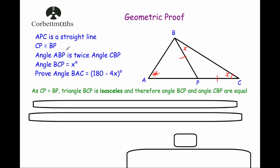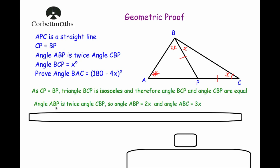Next, the question tells us that angle ABP is twice angle CBP. So if this angle is equal to x, this angle here would be equal to 2x. And that would mean that the whole angle at the top would be equal to 3x. So as angle ABP is twice angle CBP, angle ABP is equal to 2x, and angle ABC, the whole angle, would be equal to 3x.